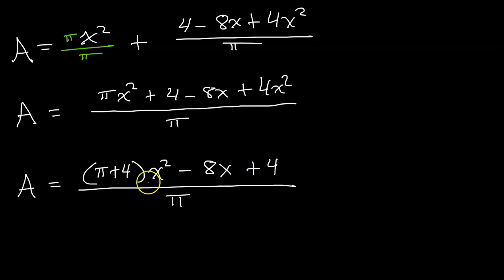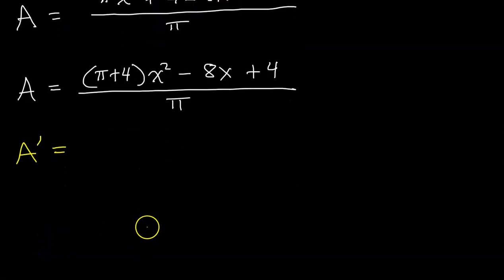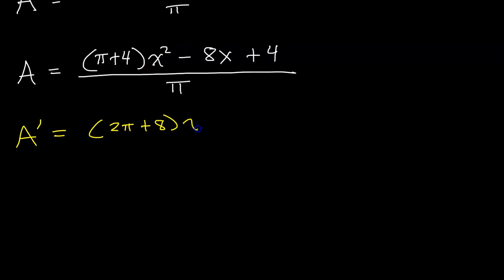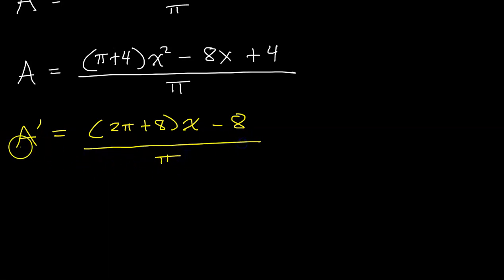This is the expression for area that we're trying to maximize, so we need to find the extrema using the first derivative test. Taking the first derivative using the power rule — multiplying 2 times the coefficient (π + 4) gives 2(π + 4), which distributes to 2π + 8. So A′ = (2π + 8)x − 8, all over π.